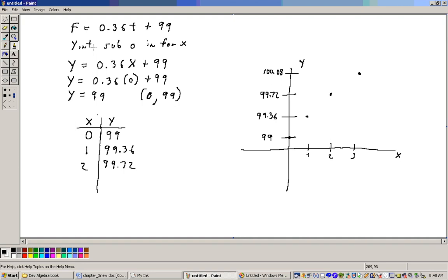Now, how do you get a Y-intercept? Well, to get a Y-intercept, substitute 0 in for X. So I'm substituting 0 right in here for X, and that would be 0.36 times 0 plus 99. Well, 0.36 times 0 is 0. 0 plus 99 is 99.